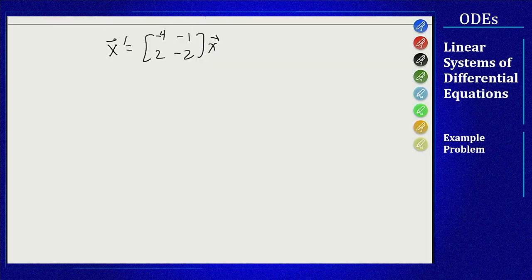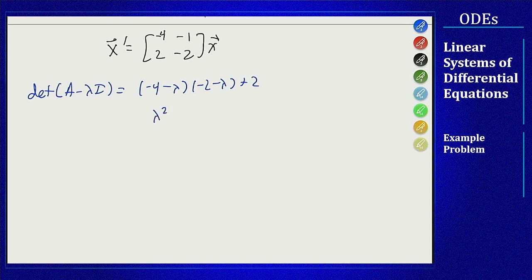Determinant of A minus lambda I equals negative 4 minus lambda, minus 2 minus lambda, plus 2, is lambda squared plus 6 lambda plus 10. It's going to be negative 6 plus or minus square root of 36 minus 40 over 2, which is negative 3 plus or minus i.